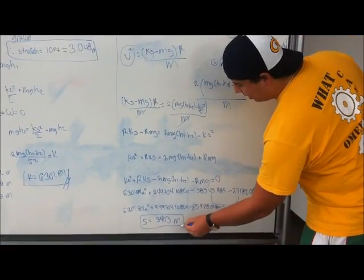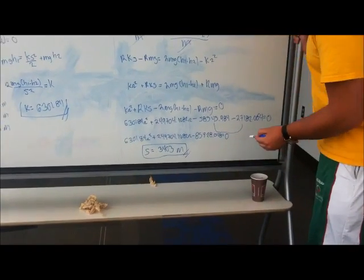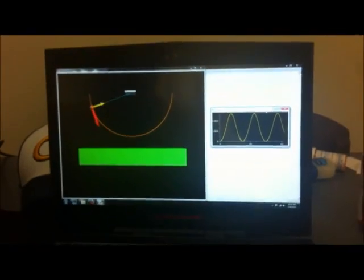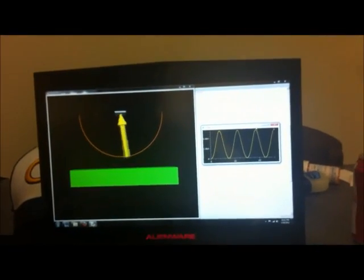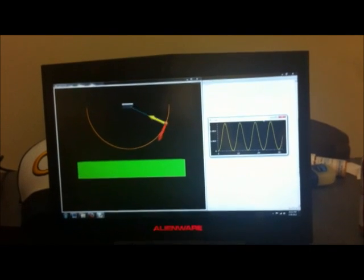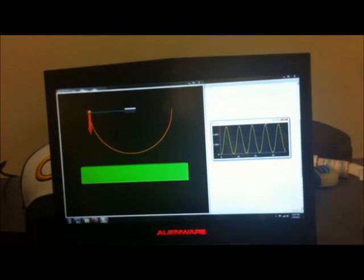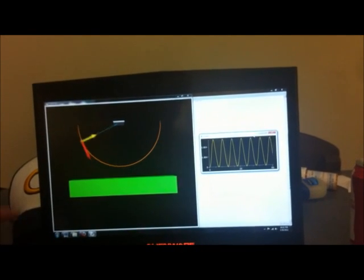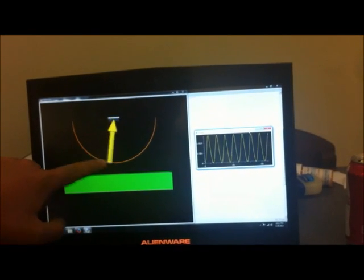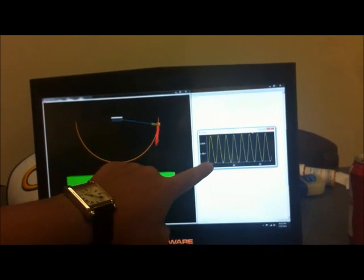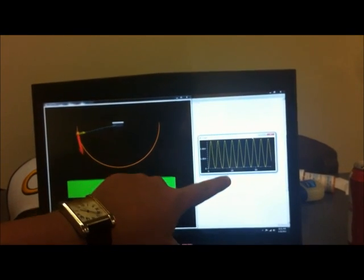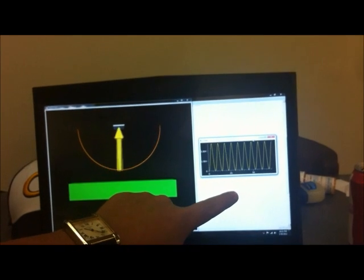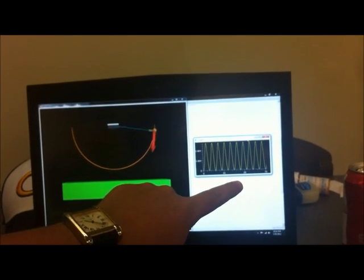Now that we have computed everything analytically, we've created a computer model. As you can observe, this model agrees perfectly with our analytical data since the tension is the greatest when it's at the bottom. And also, from the graph of kinetic energy, we can observe that when it's at the bottom, it has the greatest speed. Thank you very much for your attention.